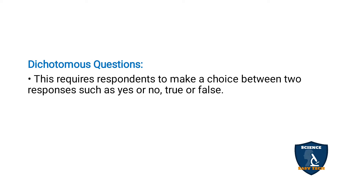Dichotomous questions require respondents to make a choice between two responses such as yes or no, or true or false. For example, 'Do you like coffee? Yes or no.' If you like coffee you select yes, otherwise no. Another example: 'Whether you live in Andhra Pradesh' — yes or no. Or 'Sun rises in the east' — true or false.